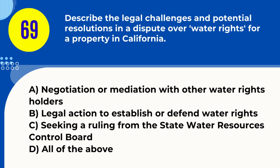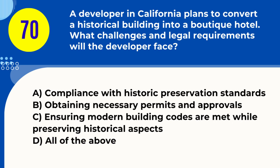Question 69. Describe the legal challenges and potential resolutions in a dispute over water rights for a property in California. A. Negotiation or mediation with other water rights holders B. Legal action to establish or defend water rights C. Seeking a ruling from the State Water Resources Control Board D. All of the above. Answer: D. All of the above. Explanation: Resolving water rights disputes can involve negotiations, legal actions, and seeking rulings from state authorities.